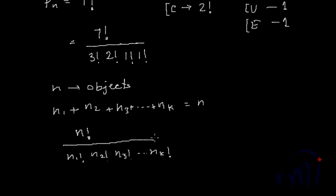So this will be the number of permutations for n number of objects where n1 objects are of 1 type, n2 are of 2 type and nk of another type, and they total actually equal to the number of objects n. Then the total number of permutations possible will be n factorial, divided by n1 factorial, n2 factorial, n3 factorial till nk factorial.